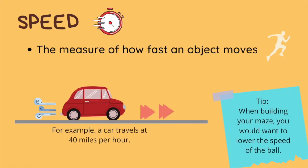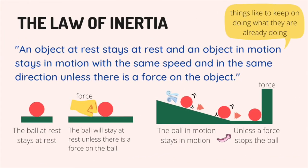Speed is the measure of how fast an object moves. For example, the speed of the car is that it is traveling at 40 miles per hour. When you are building your maze, you can lower the speed of the ball if you want it to roll longer. The law of inertia states that an object at rest will stay at rest and an object in motion will stay in motion with the same speed and in the same direction unless there is a force on the object.